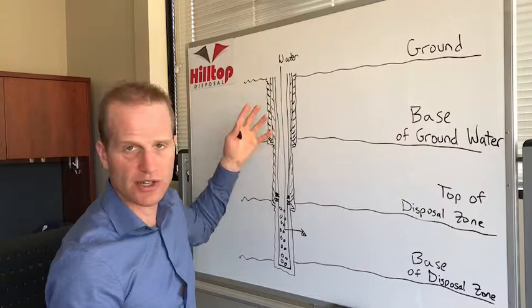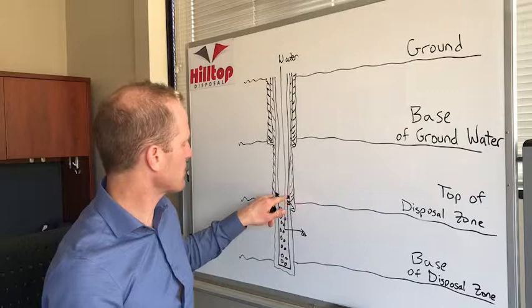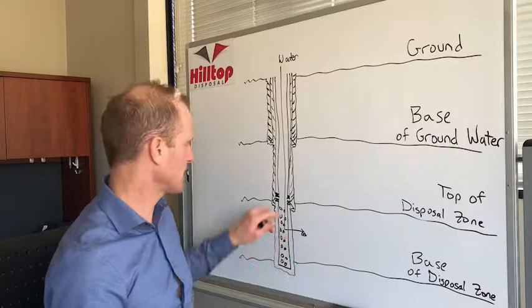Whatever the problem is, whether it's your injection string or sometimes your packer on the bottom will fail over time, you'll have to pull all that out, run something new and that ensures that your casing string is always protected.